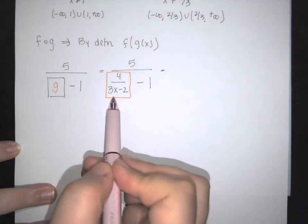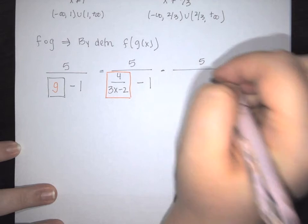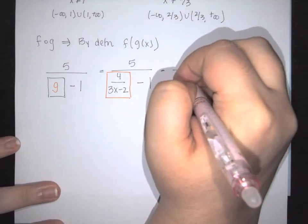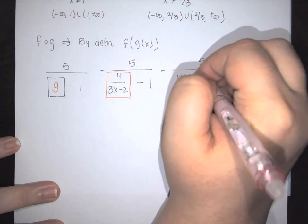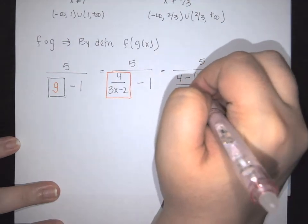First on the bottom it means we need to have a common denominator. So we're going to have a 5 on the top, and then on the bottom we're going to have 4 minus, it's the 3x minus 2, the whole thing is over the 3x minus 2.